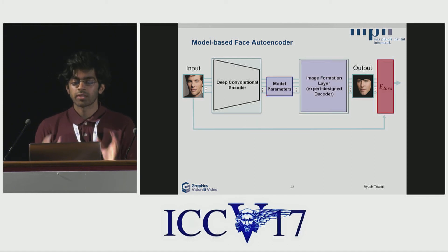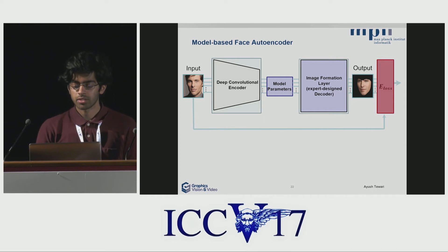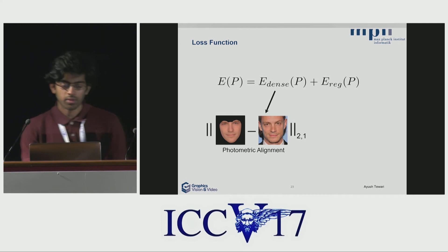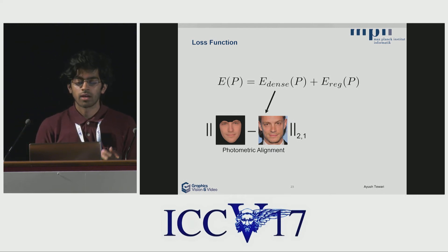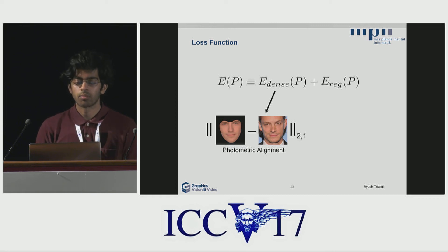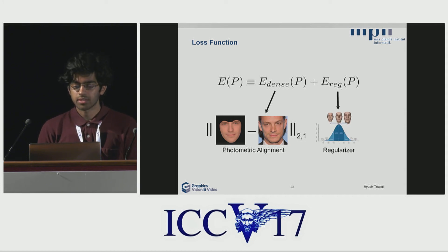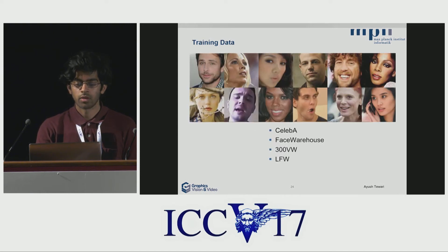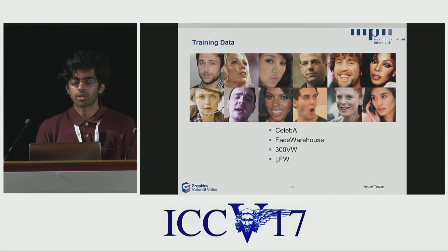The loss function compares the input image and the rendered image. It has two components. The first term looks at the photometric alignment — a dense photometric alignment which compares each vertex of the model to the corresponding pixel in the input image. We additionally have statistical regularizers on the parameters of the model, which try to keep the reconstruction within the plausible space of faces. With this loss function and network, we train on more than 100,000 images collected from four different datasets. Since we do not require any ground truth, these are just crops of faces with no corresponding annotations.